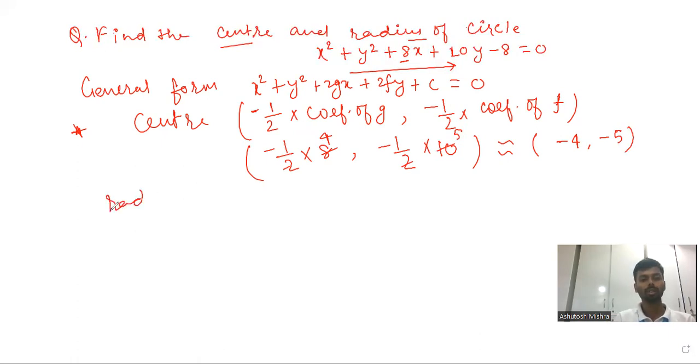Now for the radius, this is the formula. We have a previous video where we derived the general equation of circle with the help of standard equation. We have a formula for radius: r = √(g² + f² - c).